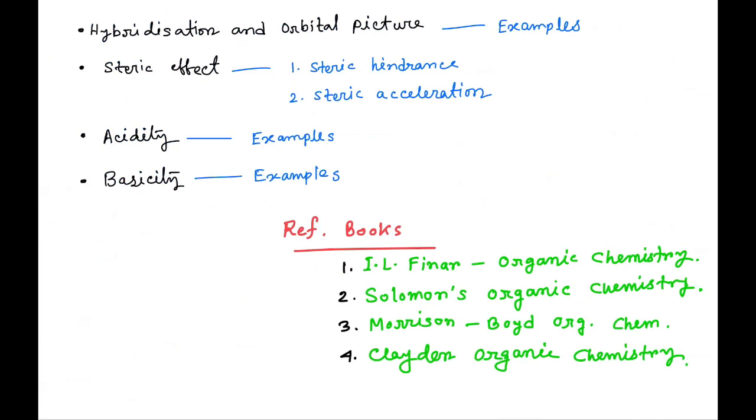After all these topics are complete, we will go to hybridization and how we can draw the orbital picture. If we draw organic molecules in the orbital picture, how can we visualize them? The understanding of organic molecules will become much more clear through this. We will do a lot of examples - we will do 10 to 15 examples. This topic will be very interesting.